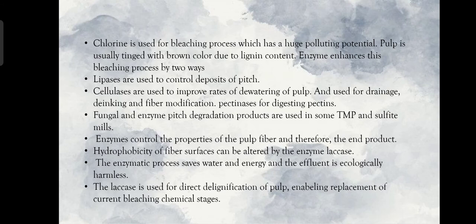Chlorine is used for bleaching processes, which has a huge polluting potential. Pulp is usually tinged with brown color due to lignin content. Enzymes enhance the bleaching process in two ways: lipases are used to control deposits of pitch, and cellulases are used to improve the rates of dewatering of pulp and are used for drainage, de-inking, and fiber modification.